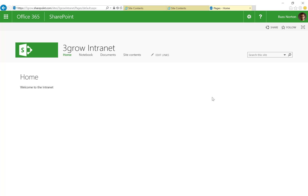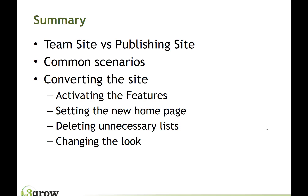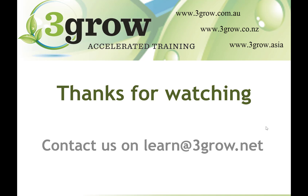So now we have a publishing site rather than the original team site. Anything that already existed in the lists and libraries within that site will remain intact, aside from the site pages library which we deleted. To recap: we looked at a comparison between team sites and publishing sites, talked about common scenarios when you may need to convert a team site to a publishing site, then went through the process — activating the site collection level publishing infrastructure feature, then the site level publishing feature, creating and setting a new publishing homepage, deleting the site pages library, and modifying the look of the site. I hope you found that useful. If you have any questions, please feel free to contact us at learn@3grow.net, and please feel free to get in touch with any suggestions for other videos you'd like to see.